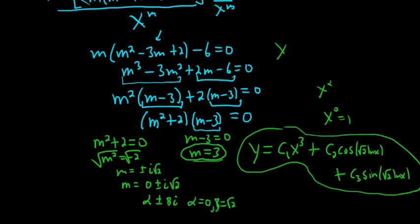Remember, the formula for complex conjugates was x^α[C₁cos(β ln x) + C₂sin(β ln x)]. So all you have to do is plug in the numbers, and that's how I got that. That's it.